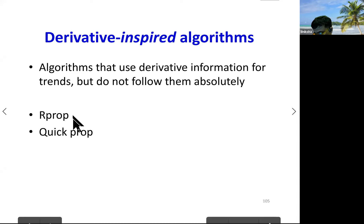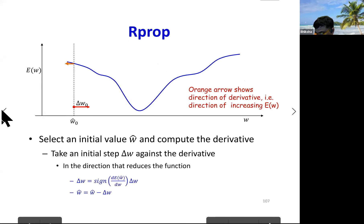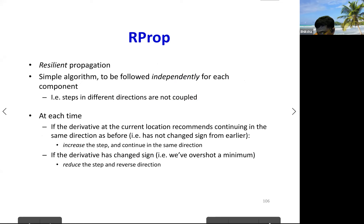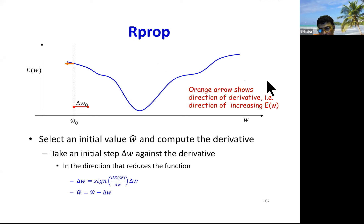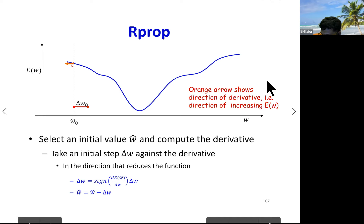We would like to release the requirement of the same step size for every dimension and allow different step sizes for different parameters. Based on this principle, two very good solutions are RProp and QuickProp. I was going to cover RProp today — it stands for resilient propagation. Here you treat each parameter independently, use only the sign of the derivative (not its magnitude), and update are done individually for each parameter. This is no longer gradient descent — it's an alternative.